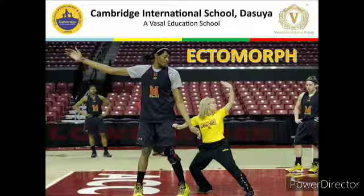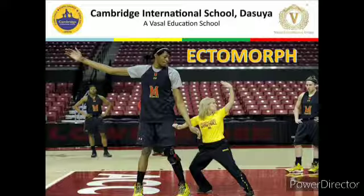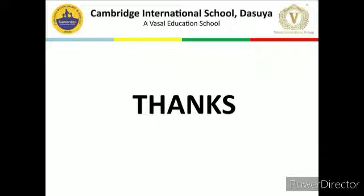Ectomorph is in many ways the opposite of endomorph. General characteristics include narrow shoulders and hips. These people are very fit for games that require tall people. Ectomorphs are also very energetic and suited for endurance and aerobic sports. So this body type is very fit for such games.